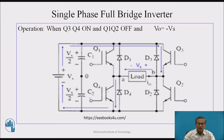Now, when the gate pulses are blocked for Q1 and Q2 and applied for Q3 and Q4, Q3 and Q4 conduct. The direction of load current is: source → Q3 → B → load A → Q4. The polarity of load voltage is exactly opposite to the previous one, and the direction of load current is also exactly opposite.